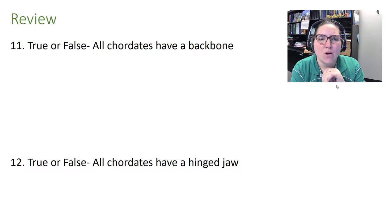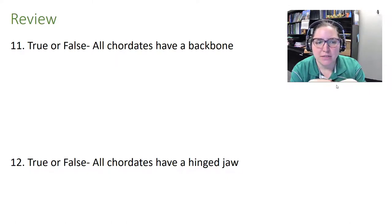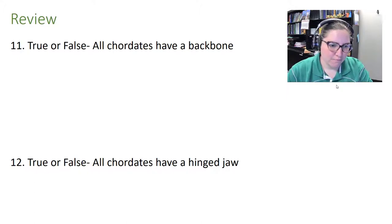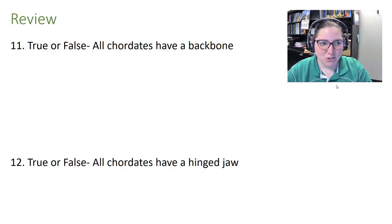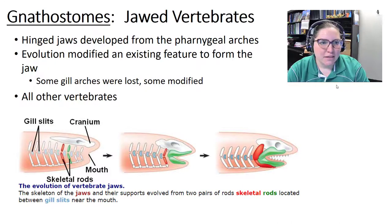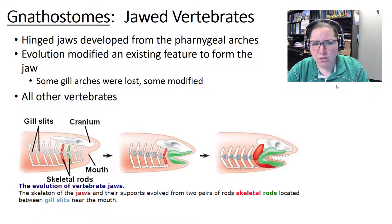True or false: all chordates have a backbone — false. There are invertebrate chordates. True or false: all chordates have a hinged jaw — also false; we haven't gotten to those yet. That brings us to gnathostomes — jawed vertebrates. They have hinged jaws that developed from pharyngeal arches, with some gill arches lost and others modified.